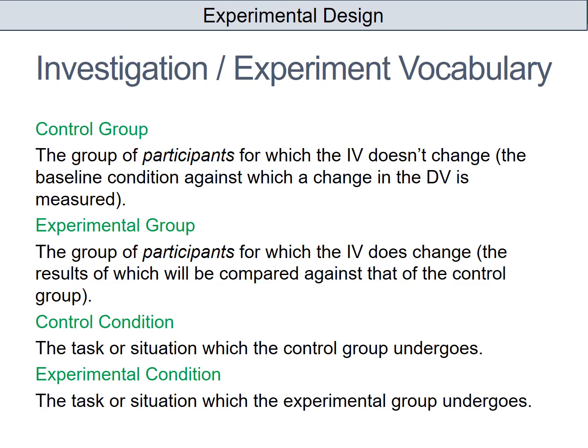Essentially, how you create your control group and your experimental group is the fundamental basis of experimental design, and there are three ways that you can use your participants. The first is called a repeated measures design, which is simply when you use the same group of people in both your control group and your experimental group.